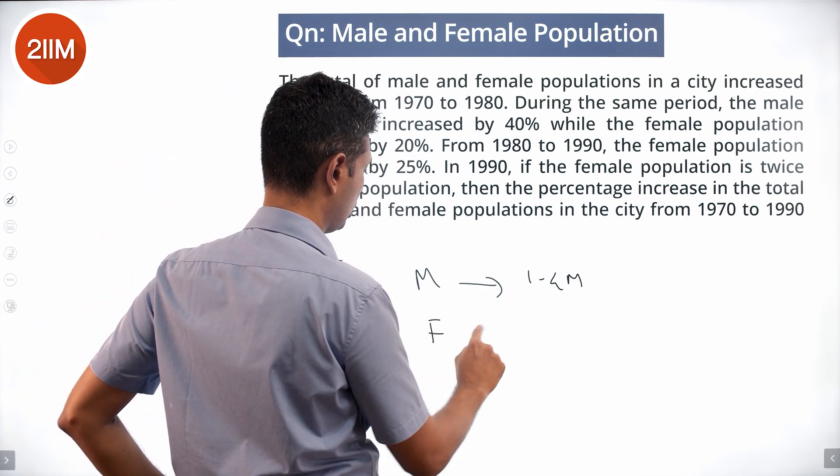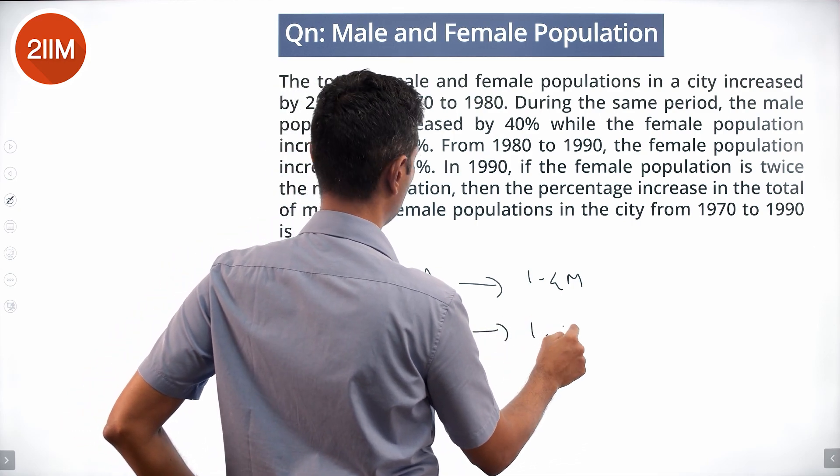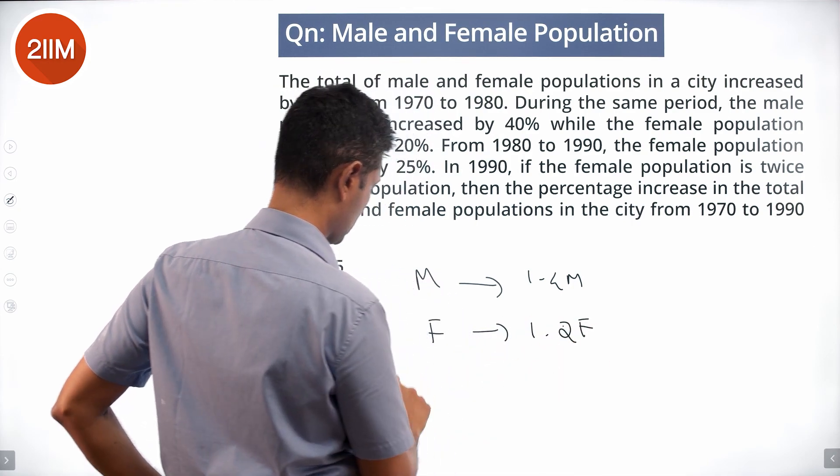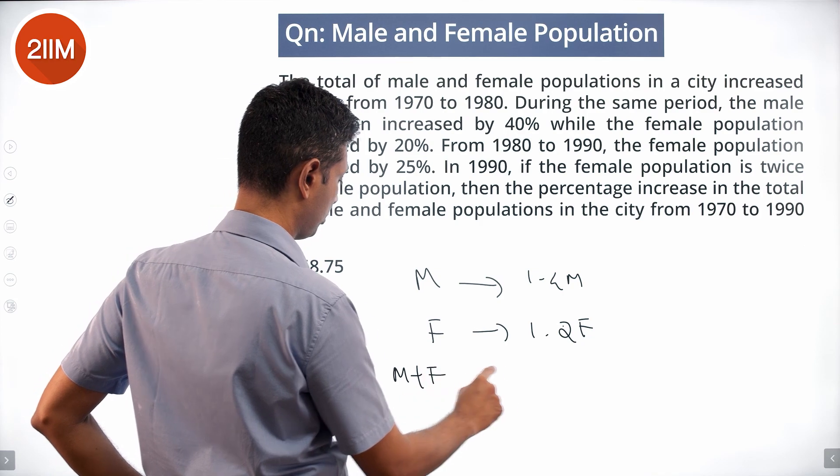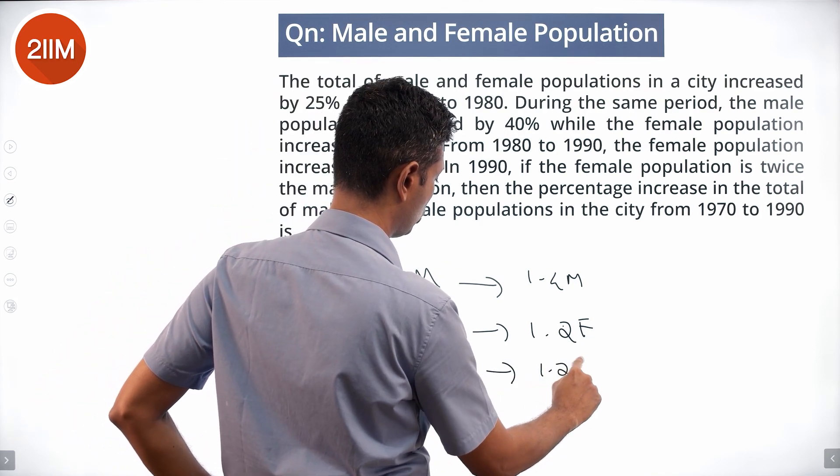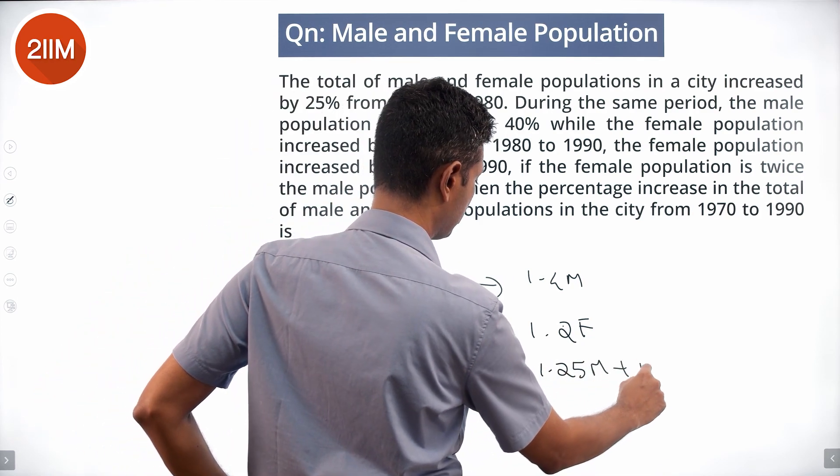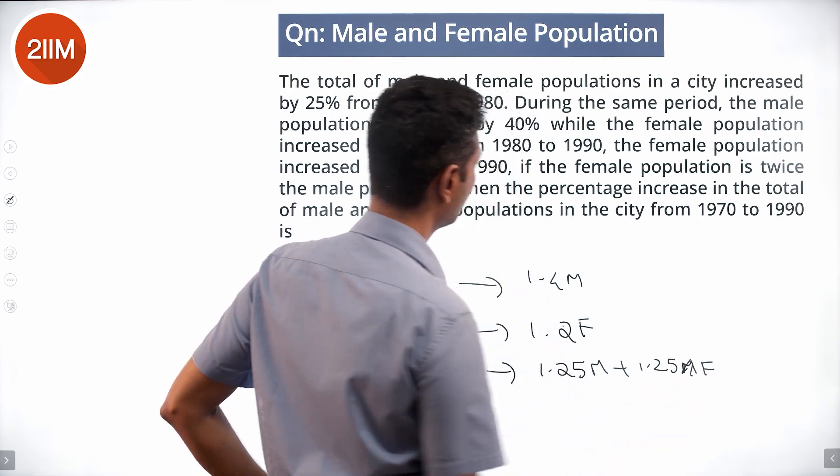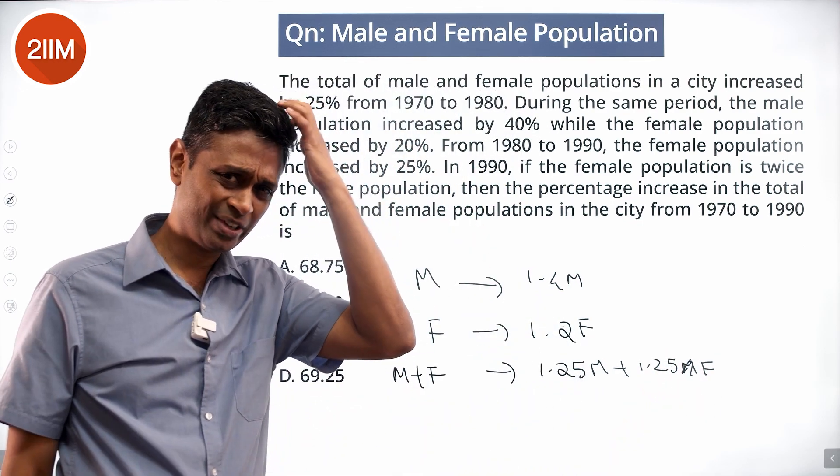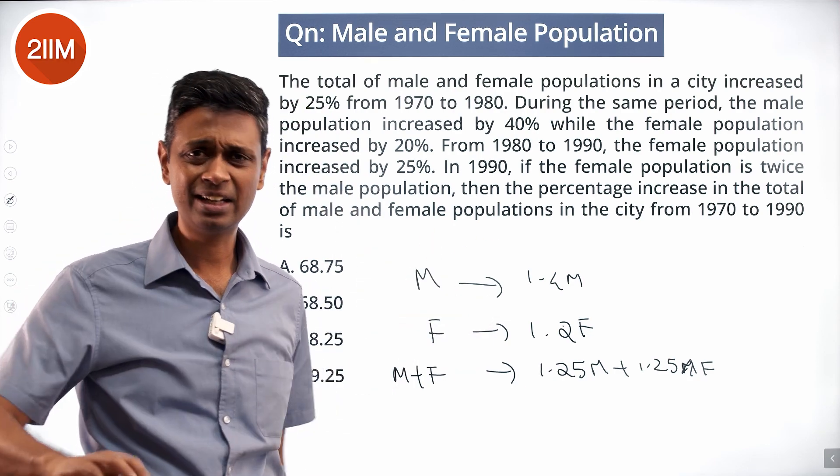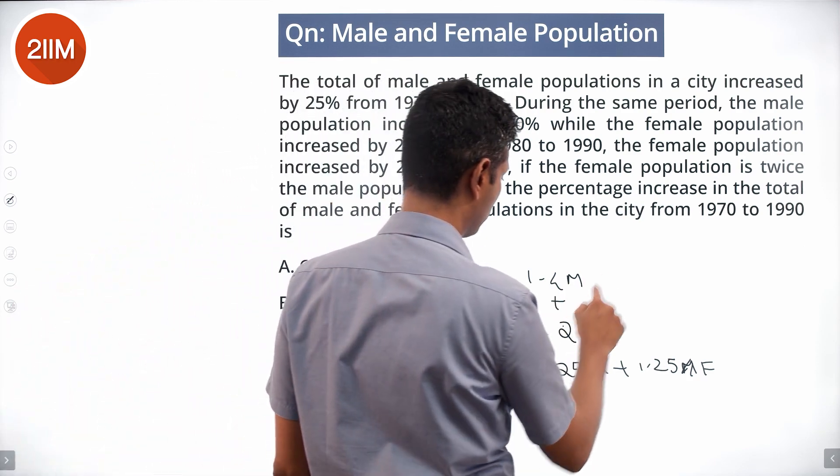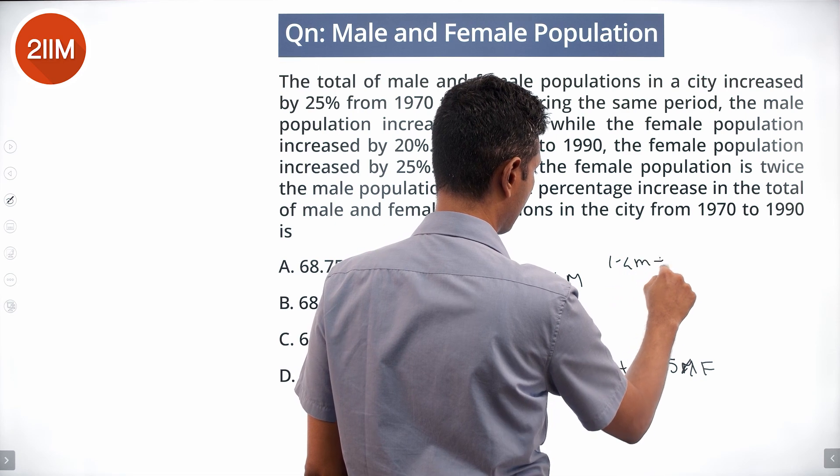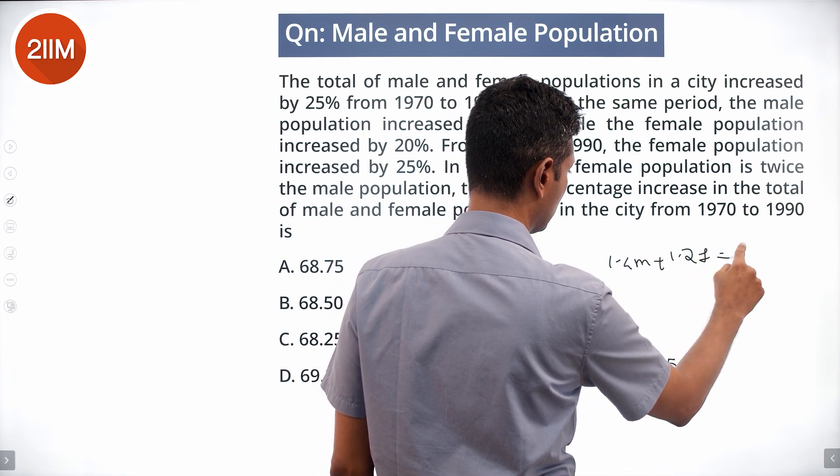Female went to 1.2F. Male plus female went to 1.25 times (M + F). First of all, we equate these two. We should get some equation linking M and F. Let's do that: 1.4M + 1.2F equals 1.25M + 1.25F.